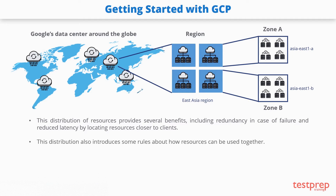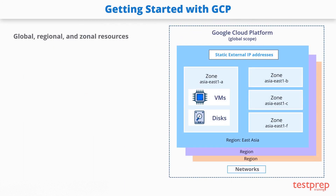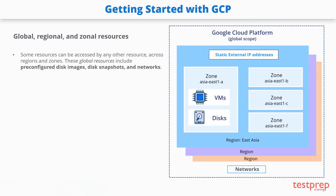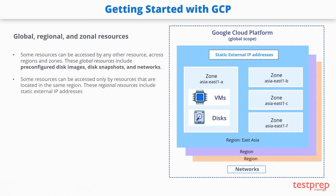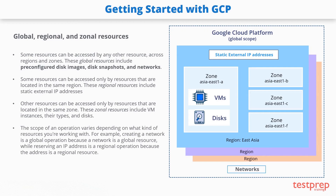This distribution also introduces some rules about how resources can be used together. The diagram here shows the relationship between global scope, regions and zones, and some of their resources. Some resources can be accessed by any other resource across regions and zones — these global resources include pre-configured disk images, disk snapshots, and networks. Regional resources, such as static external IP addresses, can only be accessed by resources in the same region. Zonal resources, including VM instances, their types, and disks, can only be accessed by resources in the same zone. For example, creating a network is a global operation, while reserving an IP address is a regional operation.